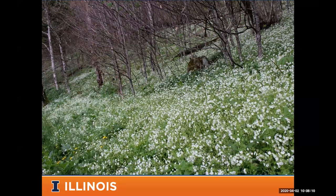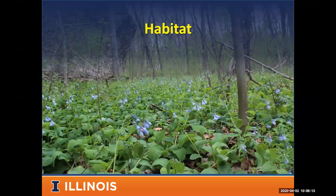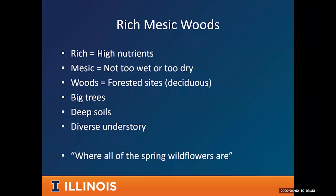Spring wildflowers don't occur everywhere — they're restricted to particular habitats. This is Virginia bluebells here. Once you know the habitat, you can predict where to find them on the landscape. Overall, when looking for big displays of spring wildflowers, you focus on what we call rich mesic woods: rich in nutrients with high nutrient availability and deep soils; mesic meaning not too wet and not too dry.